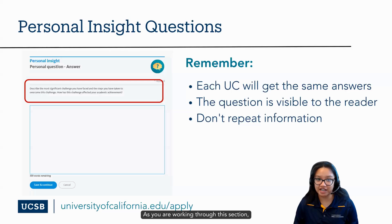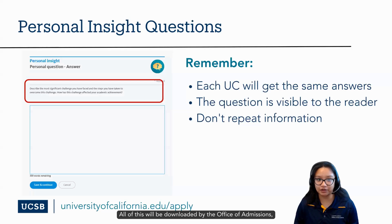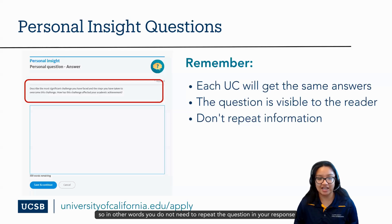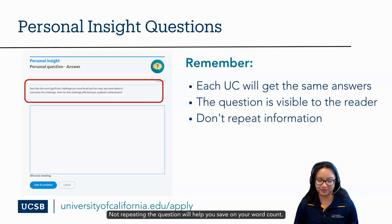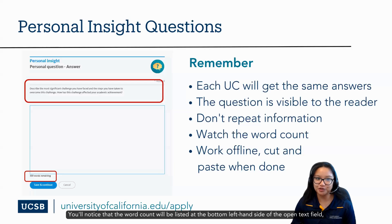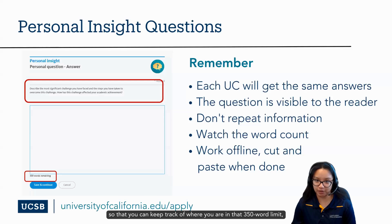As you are working through this section, the questions will be noted at the top of the screen with a text box underneath. All of this will be downloaded by the Office of Admissions, so you do not need to repeat the question in your response, as the admissions readers will know which questions you have selected. Not repeating the question will help you save on your word count. The word count will be listed at the bottom left-hand side of the open text field, so that you can keep track of where you are in that 350-word limit.